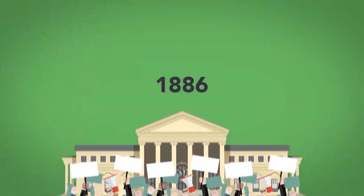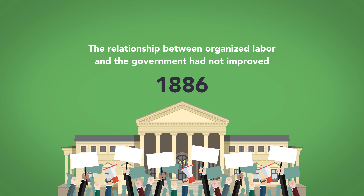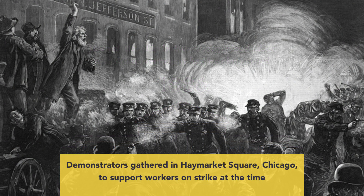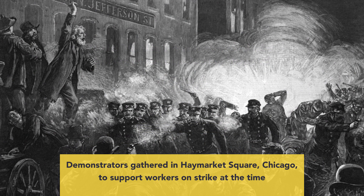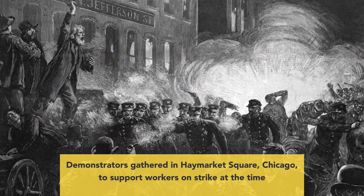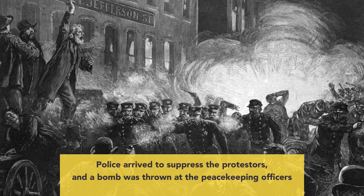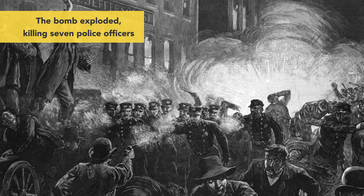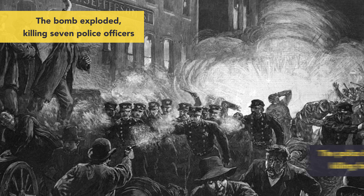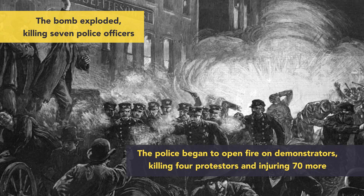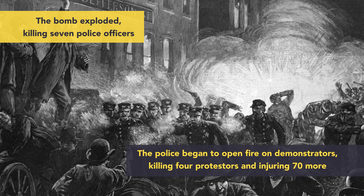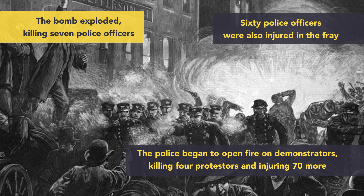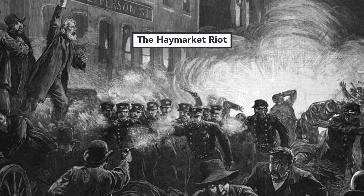Nearly a decade later, the relationship between organized labor and the government had not improved. On May 1, 1886, demonstrators gathered in Haymarket Square, Chicago to support workers on strike. Police arrived to suppress the protesters, and a bomb was thrown at the peacekeeping officers. The bomb exploded, killing seven police officers. The police began to open fire on demonstrators, killing four protesters and injuring 70 more. Sixty police officers were also injured in the fray, now referred to as the Haymarket Riot.